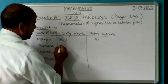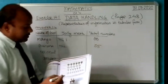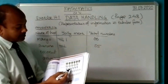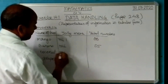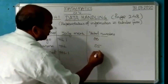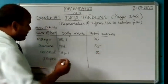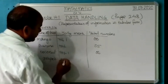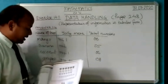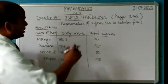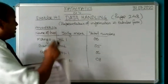Then for coconut: one, two, three, four, five, six — six coconut trees. And grapes: one, two, three, four, five, six, seven, eight — eight grape trees. This is the tabulation for question number four — this is the data and this is the tabulation.